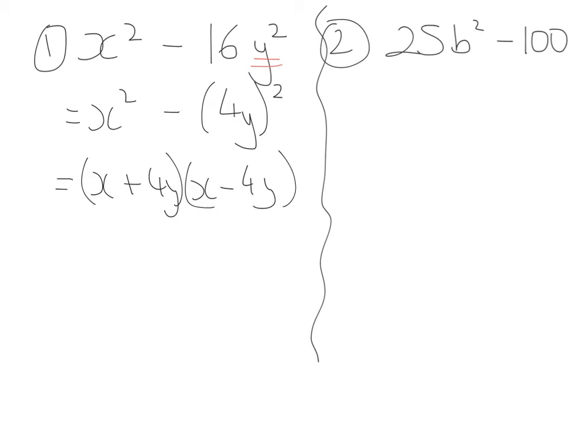Moving on to our second example, we want to make sure that every number has a square on its shoulder. At the moment, the b has a square on its shoulder, but we need to change 25 as having a square on its shoulder. So that's going to become 5b, all to be squared, minus, what number squared gives you 100? It's going to be 10. And then we share out our double brackets. 5b is shared out, and our 10 is shared out, and a plus in one bracket, and a minus in the other.